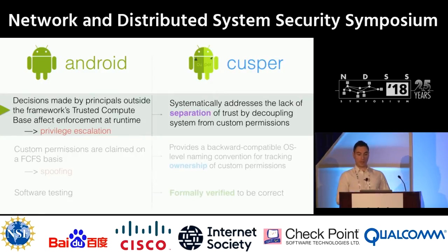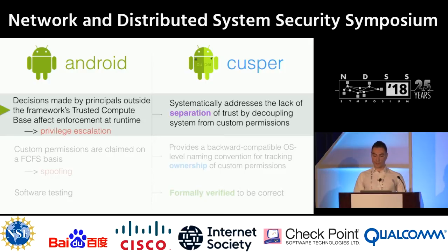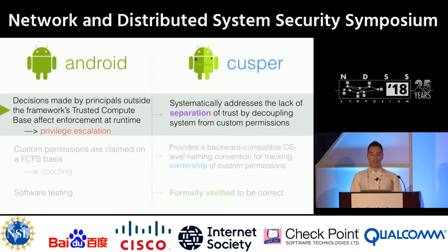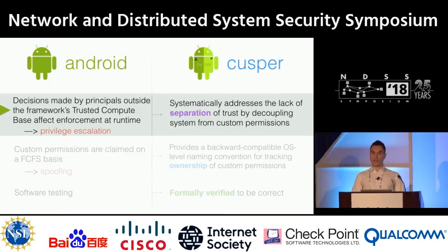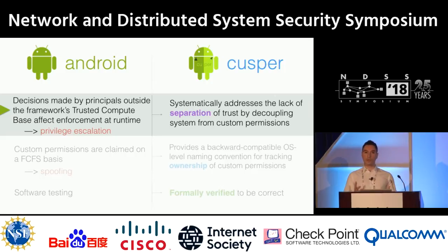These are Casper's major contributions. First, Android currently does not have the capacity to distinguish between a permission defined by the system and a permission defined by less privileged principals. As we saw, this can lead to privilege escalation attacks. Casper introduces a clean separation between system and custom permissions, making it easier for Android engineers to make security decisions and harder for future problems to arise.